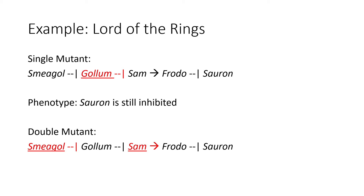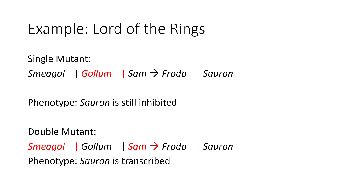In a double mutant, we might have both Smeagol and Sam mutated. If Smeagol doesn't work, then Gollum's transcription occurs as normal and works to inhibit Sam. This inhibition doesn't matter though, as Sam is already mutated and cannot stimulate Frodo. Since Frodo can't be stimulated, Sauron is transcribed.